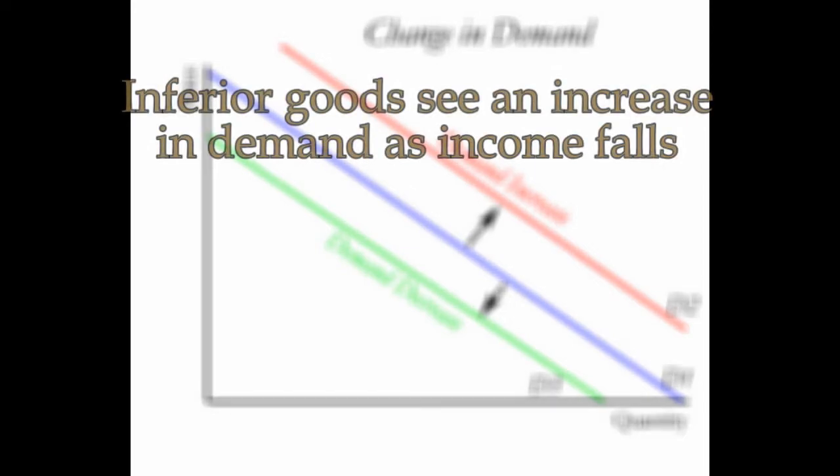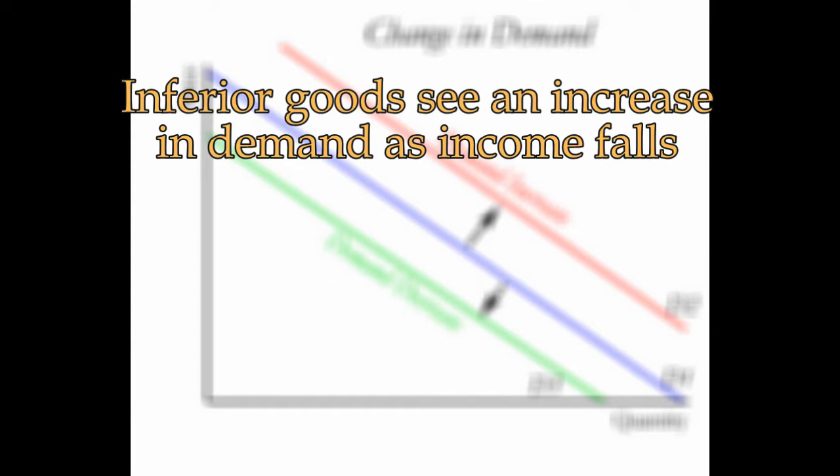Goods like t-shirts and ramen noodles are classic examples of inferior goods. Note the name inferior makes no judgment about the quality of the good. It just identifies a class of goods and consumer response to those goods.